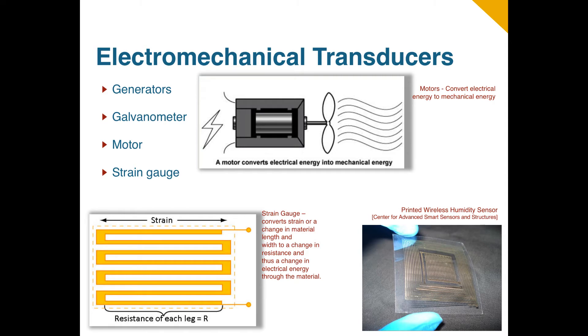The image on the bottom right is of a printed wireless humidity sensor, which is printed with an inkjet printer using silver nanoparticle-based ink.